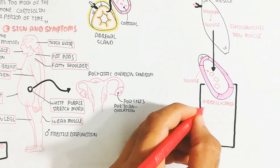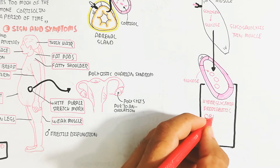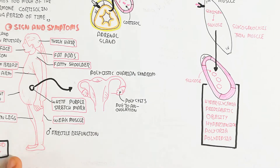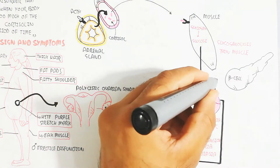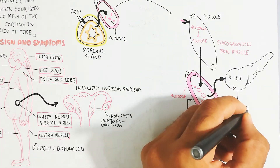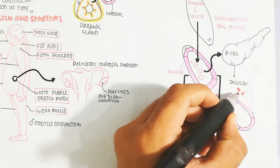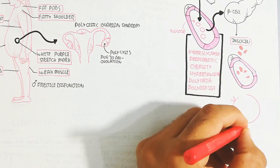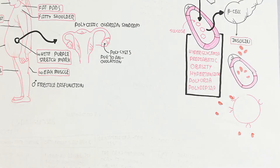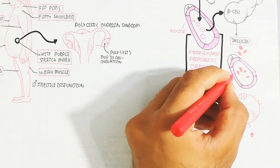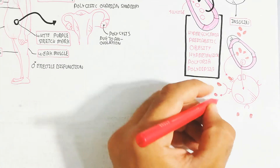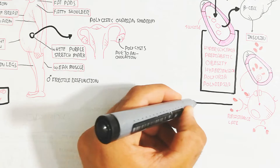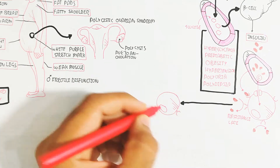This hyperglycemic effect causes the beta cells of the pancreas to produce more insulin. The result is hyperglycemia, pre-diabetes, obesity, hypertension, and polyuria and polydipsia from sugar excretion. On the other hand, chronic activation of beta cells to produce more and more insulin leads to insulin resistance due to receptor damage. This insulin resistance causes pre-diabetes, which can progress to type 2 diabetes mellitus.